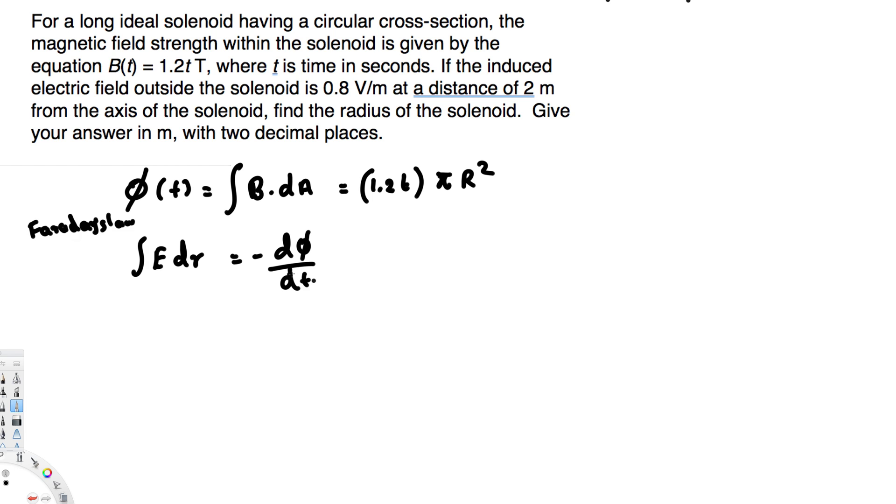Integration of E·dR is equal to negative dφ/dt, and this is φ(t). So if I take derivative dφ/dt, we will only have 1.2πR². We get rid of this T.